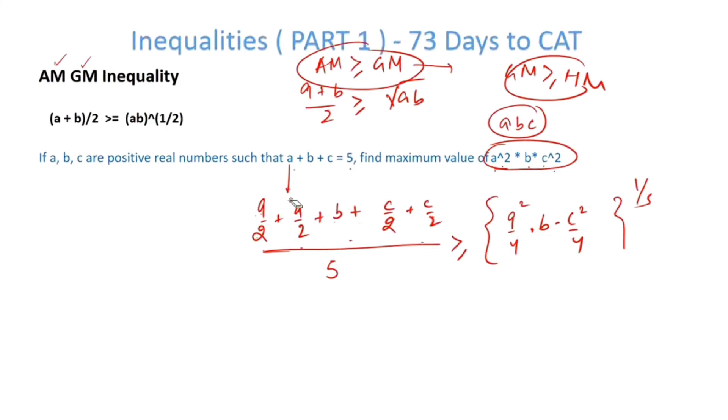That is the reason why I had split it into a by 2, a by 2, b and c by 2, c by 2. This is nothing but a plus b plus c, so that is 5. 5 upon 5 becomes 1. So a²bc² raised to the power 1 by 5 less than equal to 16 raised to the power 1 by 5. So a²bc² less than equal to 16.